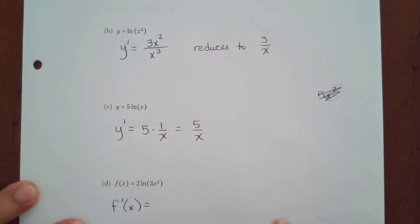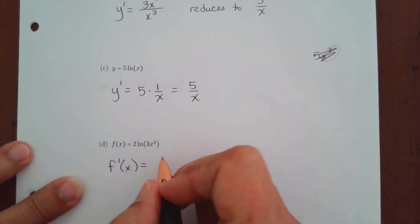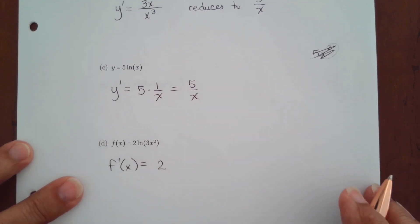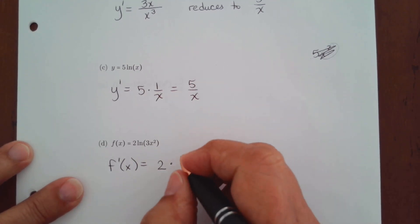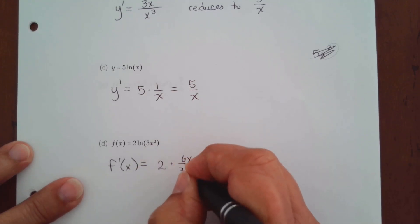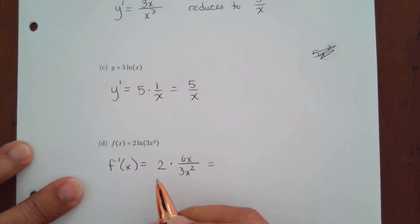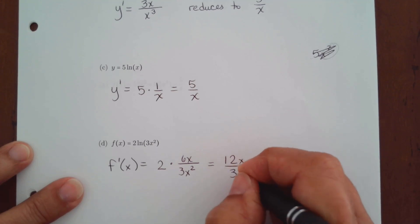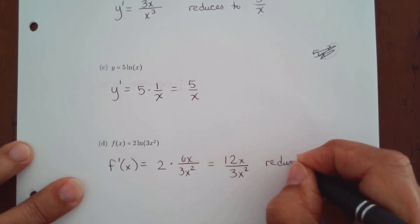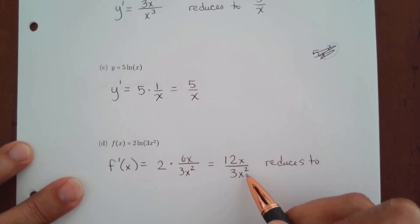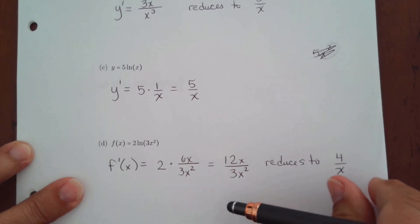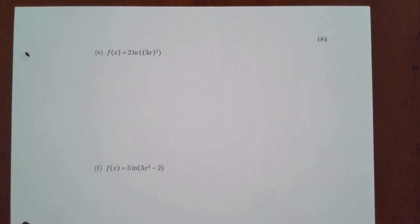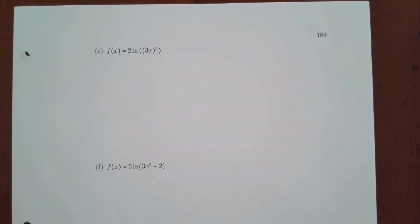For part d, f(x) has a constant 2 out front which stays in the problem. The function inside is 3x squared. The derivative of 3x squared is 6x, which goes in the numerator; the function 3x squared goes in the bottom. Cleaning up: 2 times 6 is 12x over 3x squared, which reduces to 4 over x — divide 12 by 3 to get 4, then cancel one x from top and bottom.